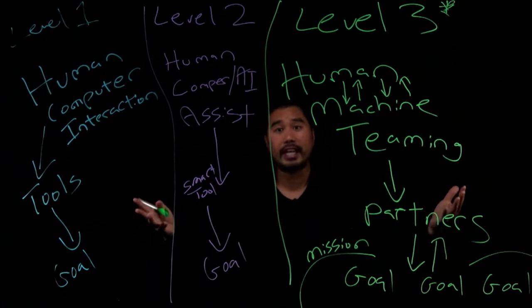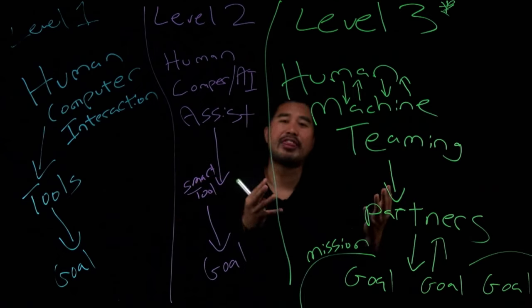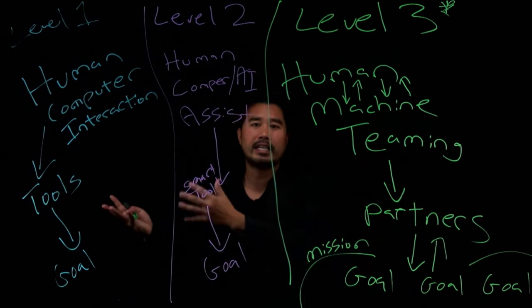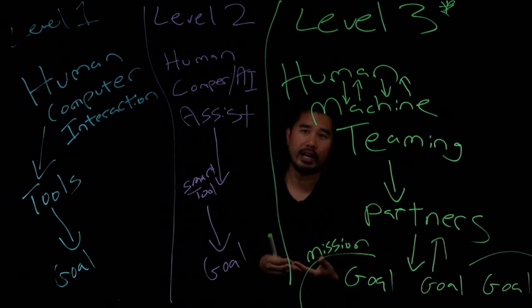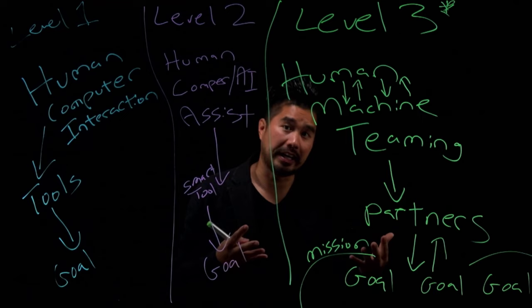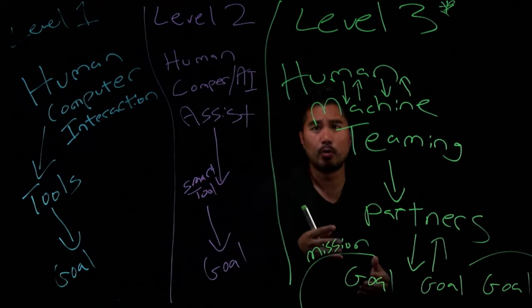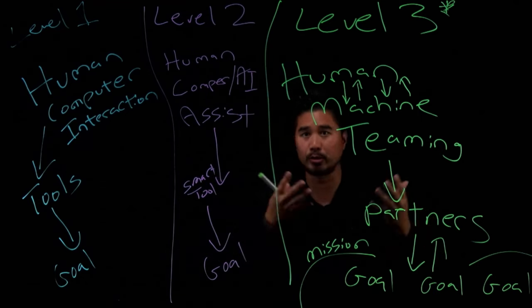So those are the three levels that to me, that's how I think about this evolution towards this level three of human machine teaming. Us partnering with smart things, computers, machines.